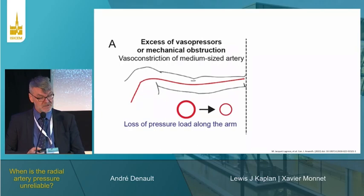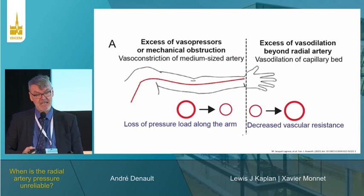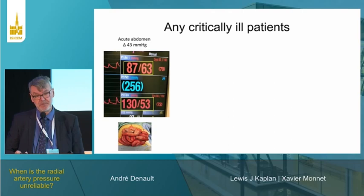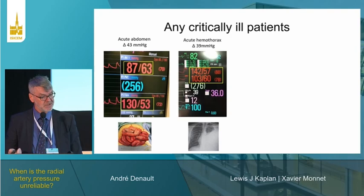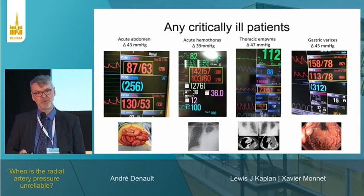Why do we have a gradient? There are two explanations: first, obstruction — excess vasopressor or arterial stenosis; second, excessive distal vasodilatation, which creates the pressure gradient. These gradients can be seen in any critically ill patient — acute abdomen, hemothorax, thoracic empyema, gastric varices. They are not unique to cardiac anesthesia — they are present in any hemodynamically unstable patient.